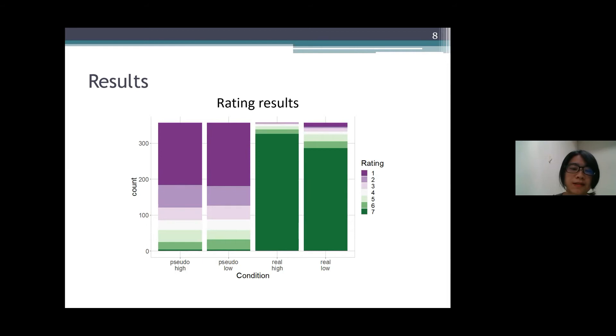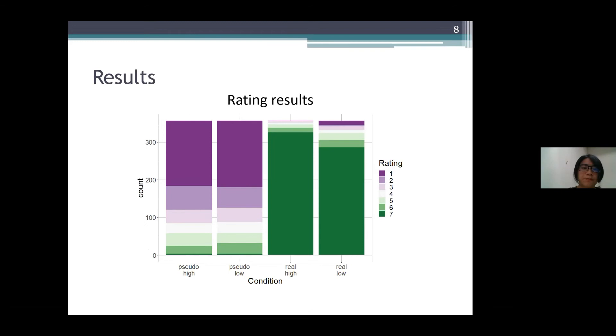So first, let's look at the two bars on the right-hand side that represent the data for real words. Real words with a low TCCP received considerably more low scores than those with a high TCCP. For pseudowords on the left-hand side, the distinction between high and low TCCPs was not very obvious.